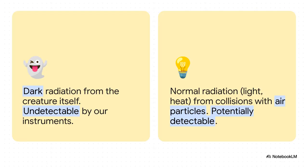Okay, so here's the trick. The creature itself is giving off what the paper calls dark radiation, that's light made from its own physics. And yeah, we can't detect that at all. But, as this thing moves through our atmosphere, it's bumping into regular old air molecules. And those collisions cause our air to release normal radiation, microwaves, light, heat. A secondary glow that our instruments can see.